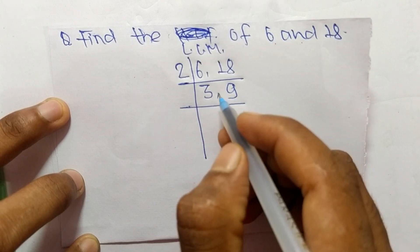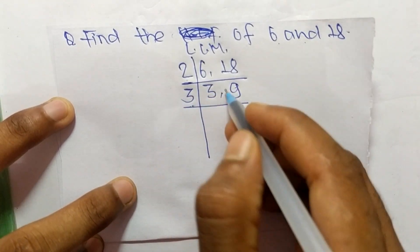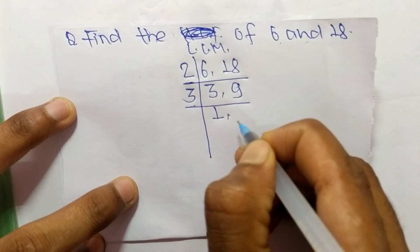3 times 1 is 3 and 3 times 3 is 9. Now 1 and 3 are not exactly divisible by the same number.